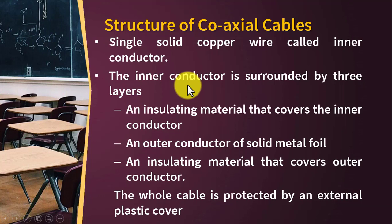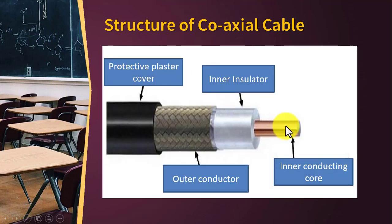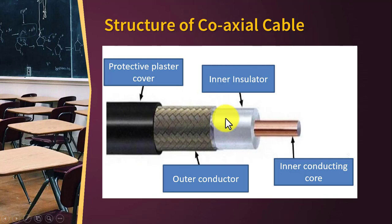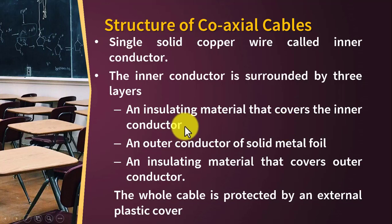The inner conductor is surrounded by three layers. Layer one, layer two, and layer three. You can see here: inner insulator, outer conductor, and protective plastic cover. These are the three layers that surround the inner conducting core. The insulating material covers the inner conductor, and the outer conductor is of solid metal foil, and insulating material covers the outer conductor.